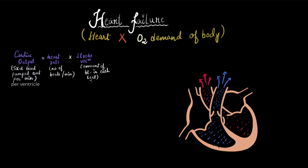Heart rate is the number of beats per minute and stroke volume is the amount of blood pumped out in each beat. So any slight change in the heart rate or stroke volume will have a direct impact on the cardiac output. If the cardiac output decreases, heart failure. So most often, the problem is seen in the stroke volume. I want you to pause the video and think of what could be the probable reasons for the stroke volume to decline.